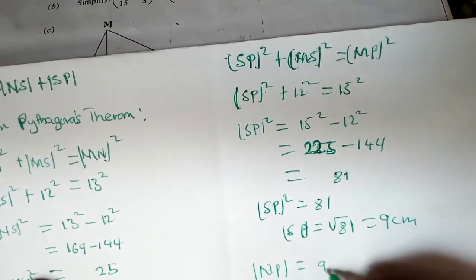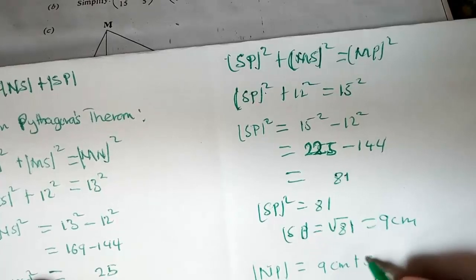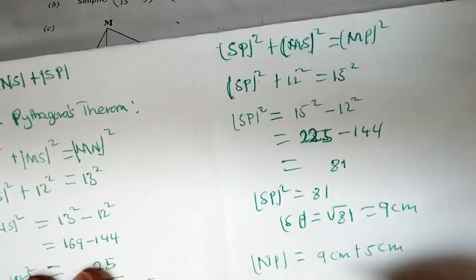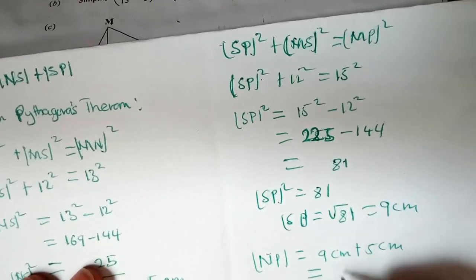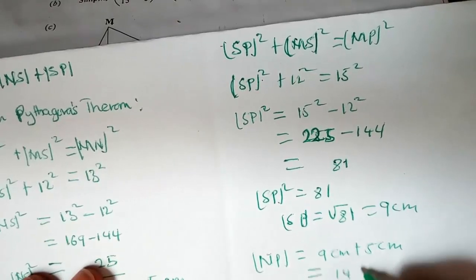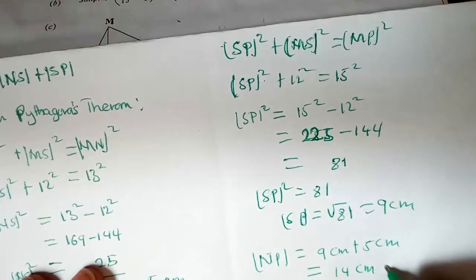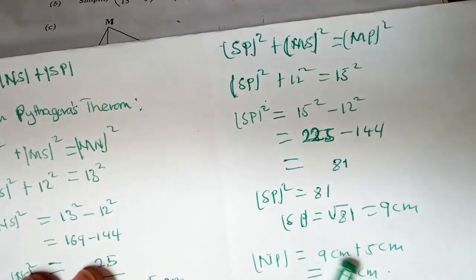So SP is 9 centimeters. Therefore NP equals NS plus SP, which is 5 centimeters plus 9 centimeters, giving NP equal to 14 centimeters.